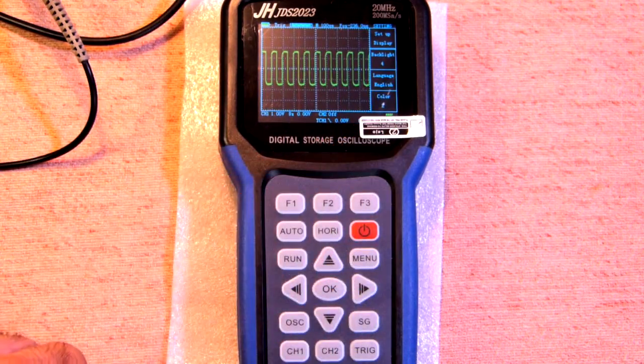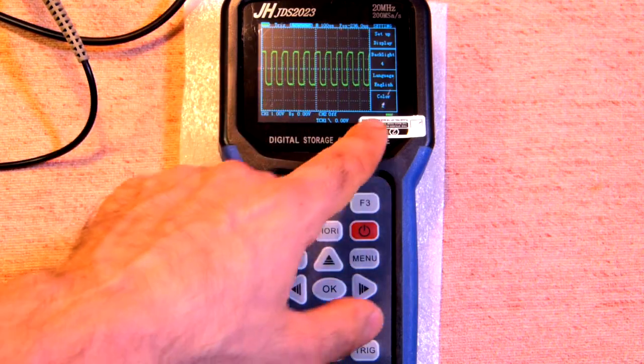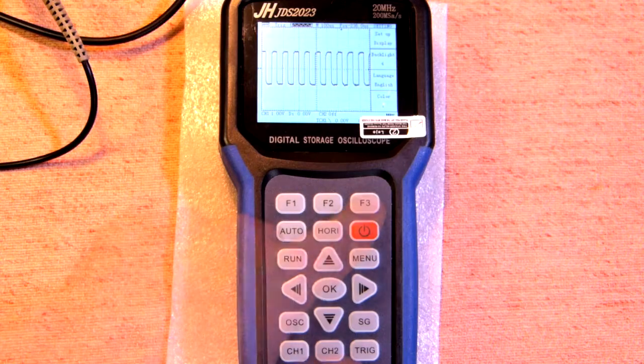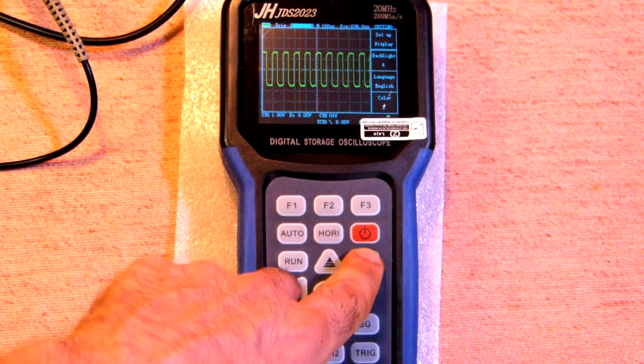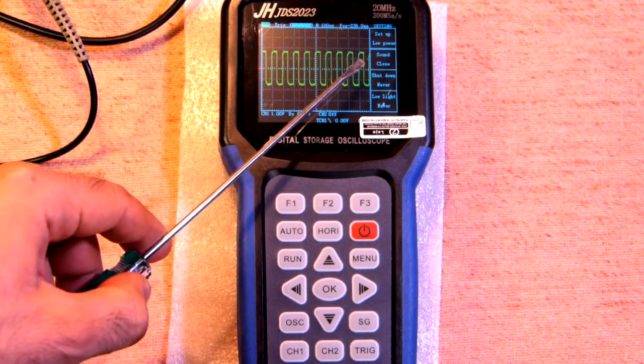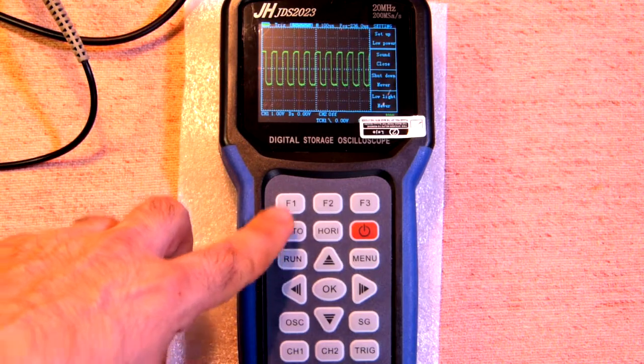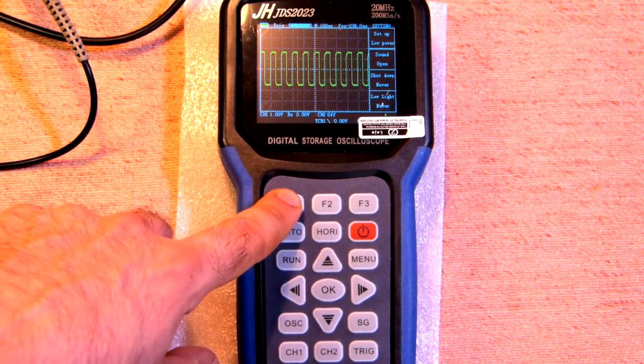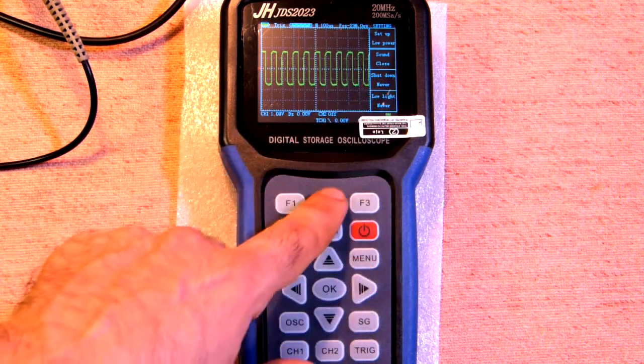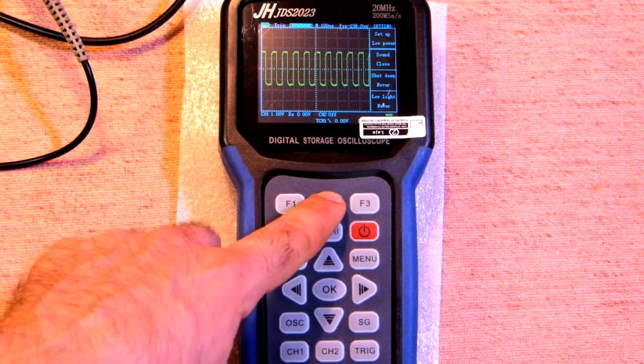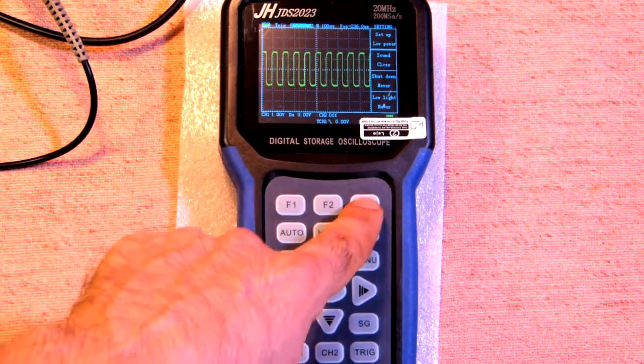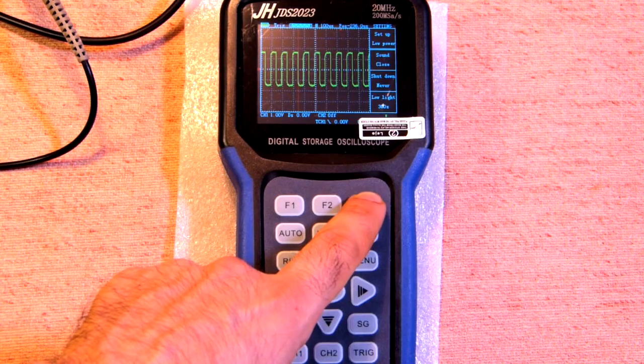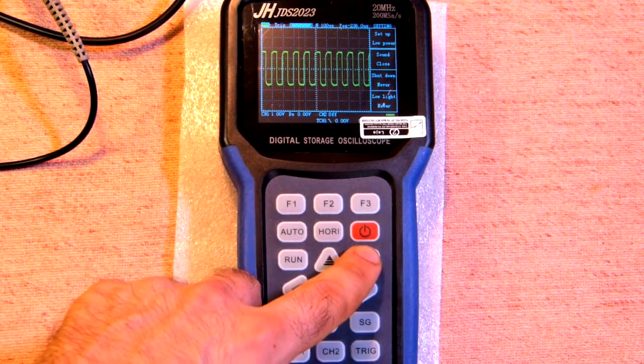And also this device has two modes. So the number two is color mode. And number one is black and white. Once again color mode. Here we have set up low power, sound close we have here. And now it will have a sound. Let's press once again. Shutdown never or maybe in 10 minutes, in 30 minutes, never and low light never, 20 seconds, 40 seconds, 60 seconds, 300 seconds never.